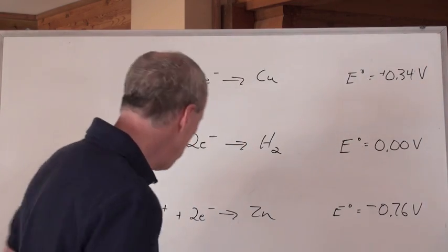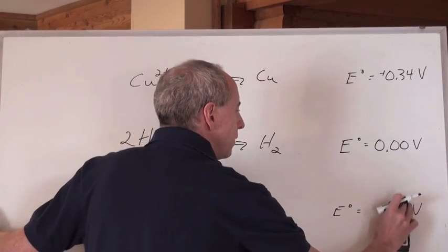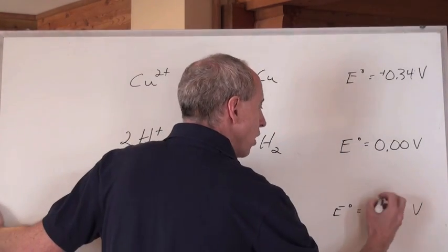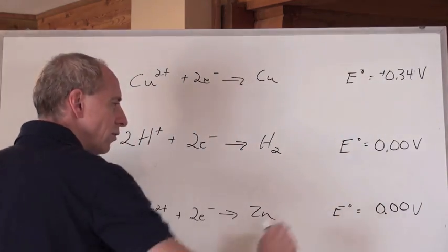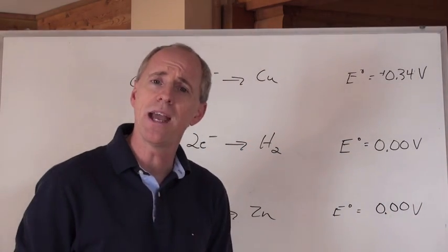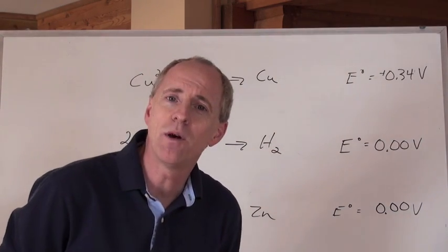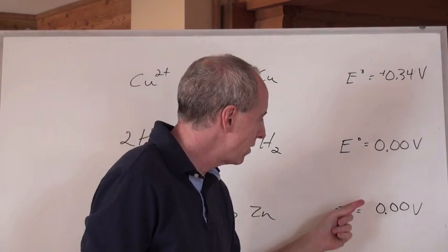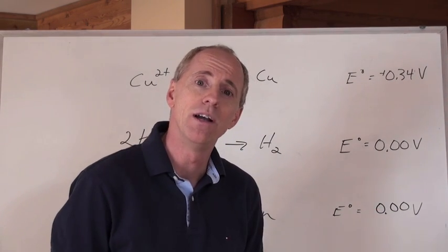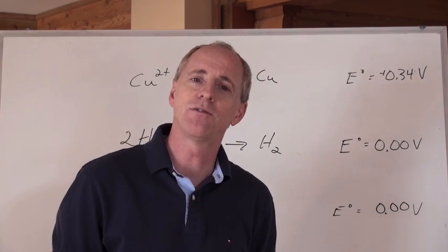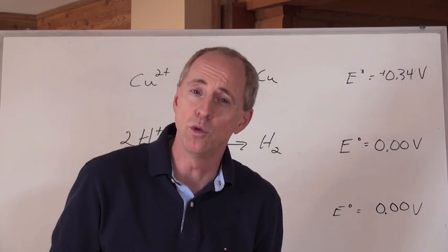that the zinc half reaction is ascribed the 0.00 volt. Now, what would that make the other half reactions on the chart? Well, if this one was given 0.00 and the new standard was created, what happens to the hydrogen one? Well, what happens to every one of them? If you added 0.76 volts to this half reaction here to make it 0,